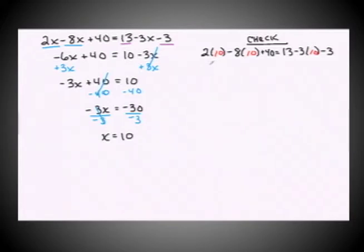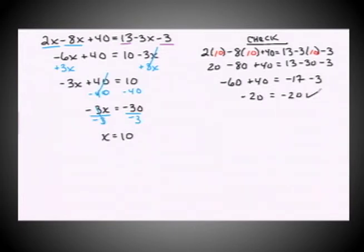So 2 times 10 is 20. Negative 8 times 10 is negative 80 plus 40. Then we have a 13. Negative 3 times 10 is negative 30 and a negative 3. Now I just need to combine my constants on both sides of the equation. So 20 minus 80 is negative 60 plus 40. 13 minus 30 is negative 17 minus 3. Negative 60 and positive 40 give negative 20. And negative 17 and negative 3 combine to also make negative 20. So we can safely say that 10 is the solution to our linear equation.